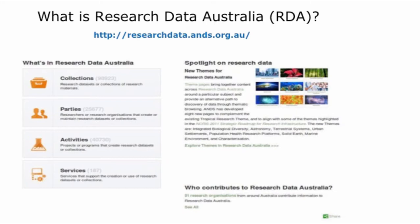Research Data Australia is designed to promote the visibility of research data collections in search discovery engines such as Google and Yahoo, and to encourage the reuse of those collections. It's essentially the face of the ANS Register My Data Service, or the ANS registry. The ANS registry could be regarded as the back end of Research Data Australia — it's where records can be manually created and it's also the destination for records harvested from institutional repositories or metadata stores.